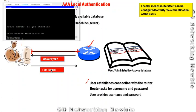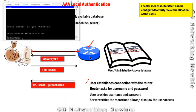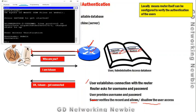For example, the user says their name is Ishan and provides a password. Once the router receives that information, the router verifies the record in its local database. If there is a record for Ishan with the correct password and the user is authenticated, the router says yes and Ishan is given a new window with access to the IOS. This is AAA local authentication.